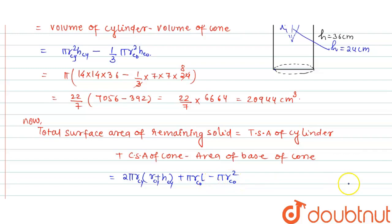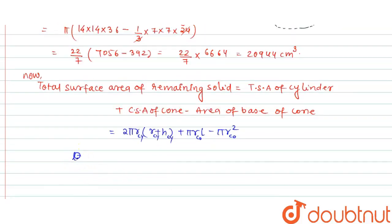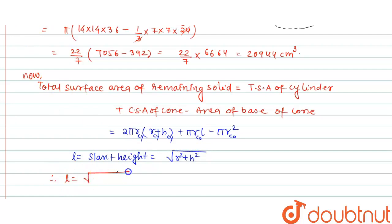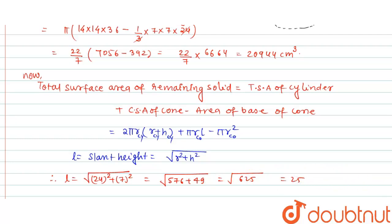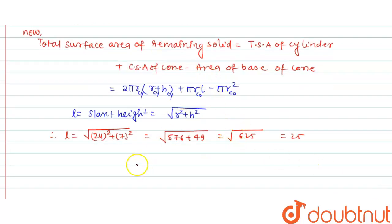We will find the slant height of the cone first. l = √(r² + h²) = √(24² + 7²) = √(576 + 49) = √625 = 25. So the slant height l = 25 centimeter.